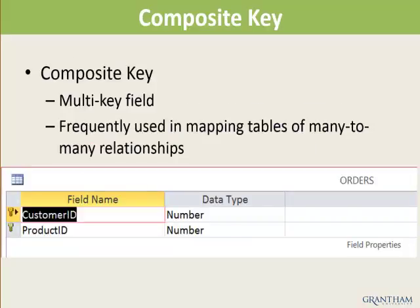A composite key is a multi-field key where two or more fields are combined to create the unique value required. Composite keys are frequently used in the mapping table of a many-to-many relationship. For example, all customers are stored in a Customer table with a key field of Customer ID, and all products are stored in a Product table with a key field of Product ID. A mapping table — such as an Orders table — can use both the Customer ID field and the Product ID field together, creating a composite key.